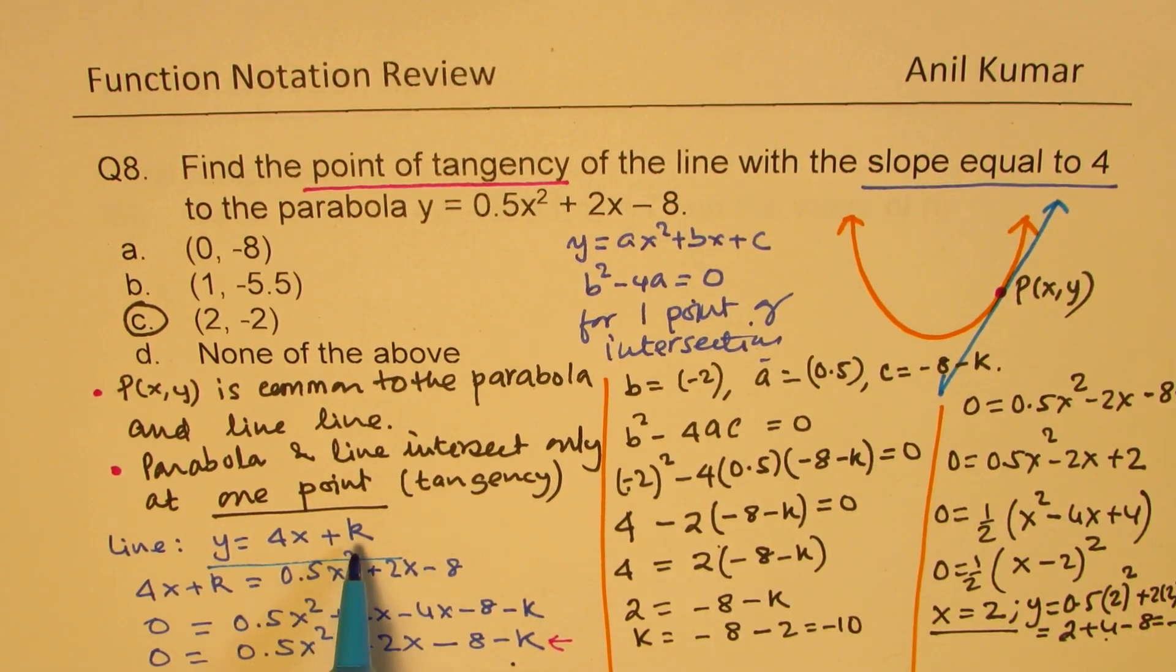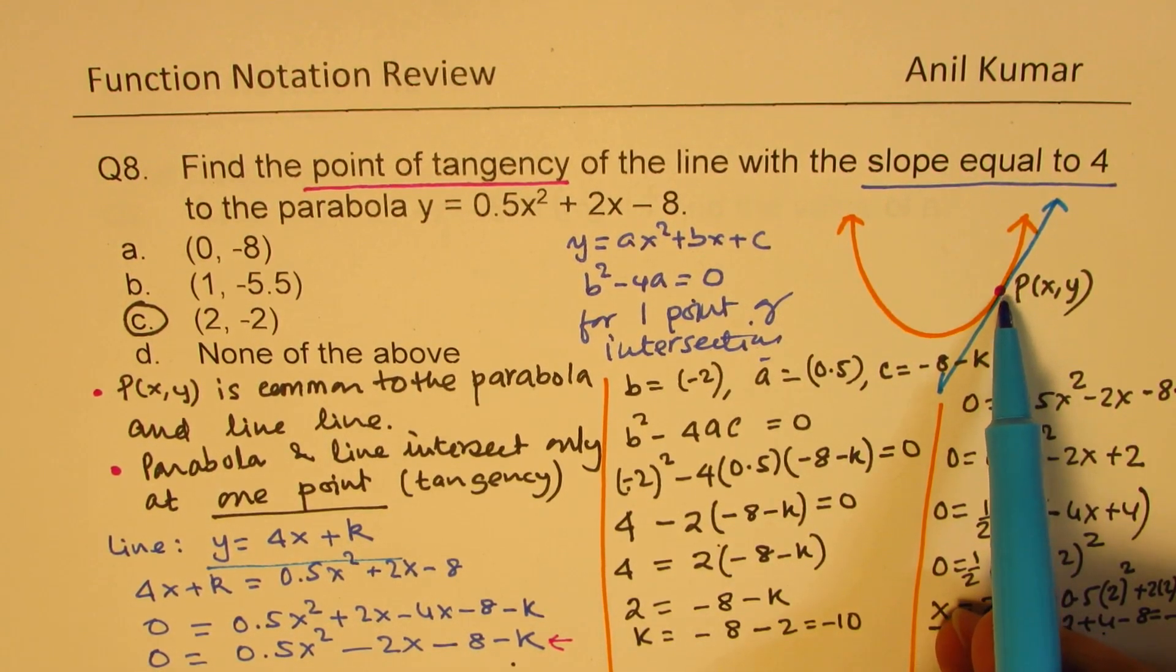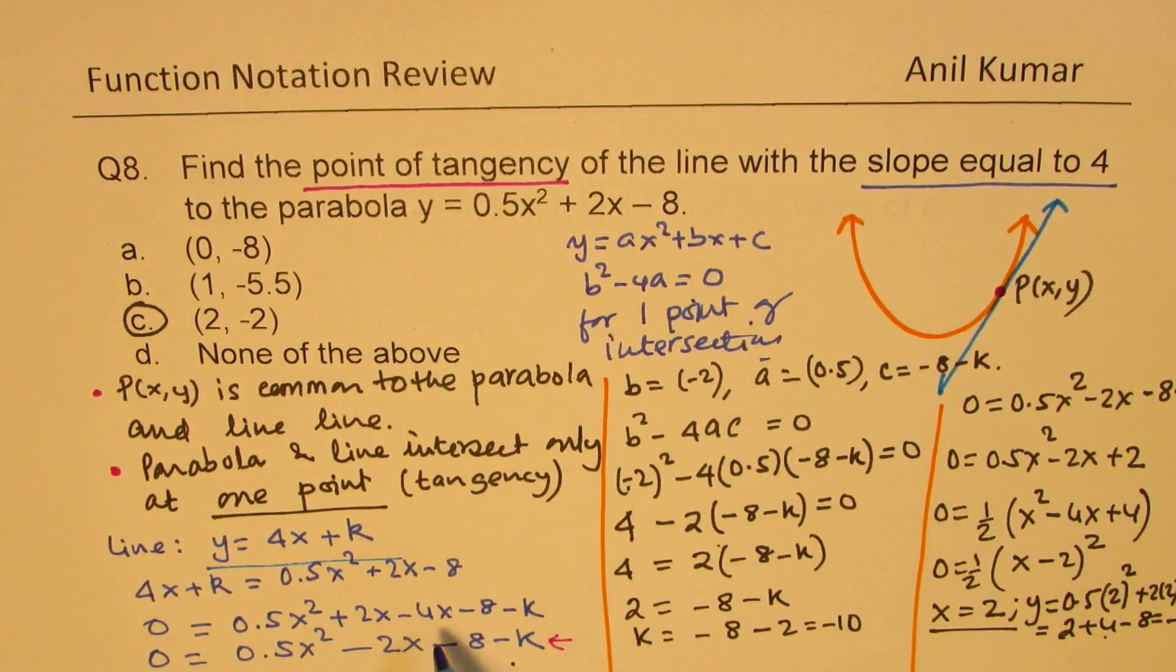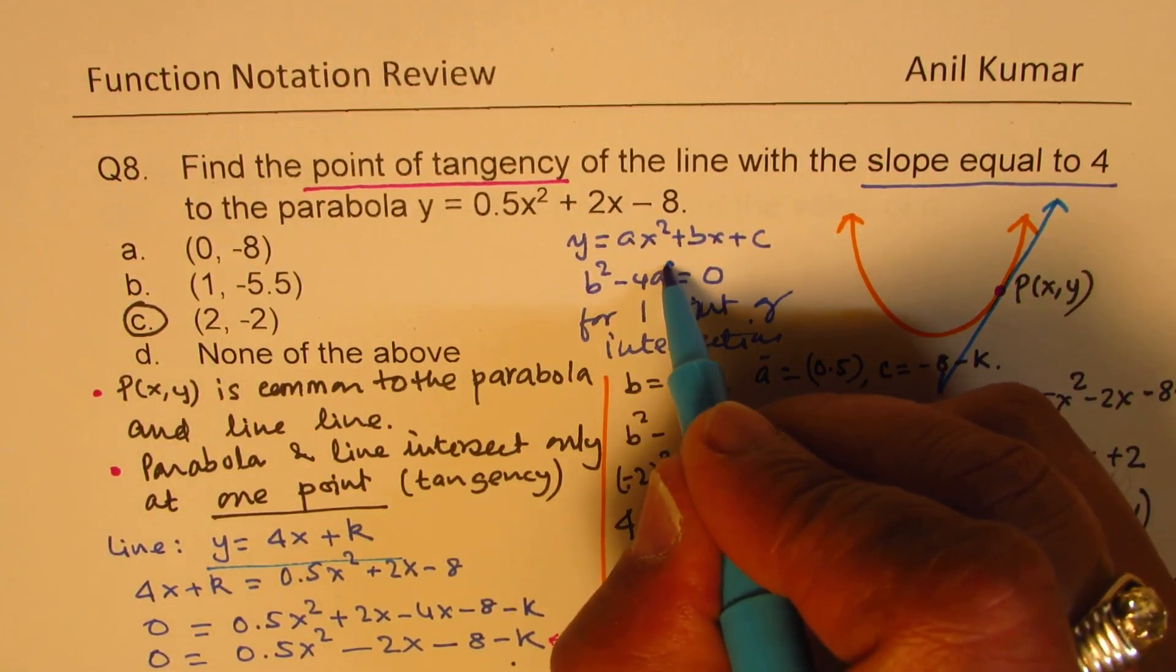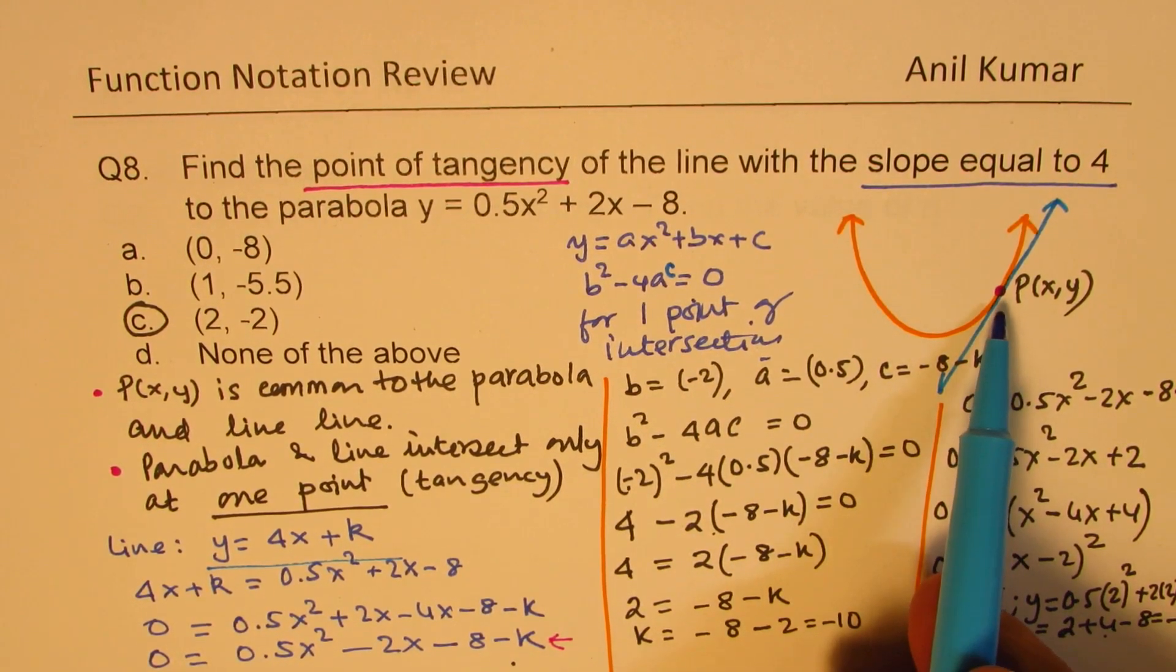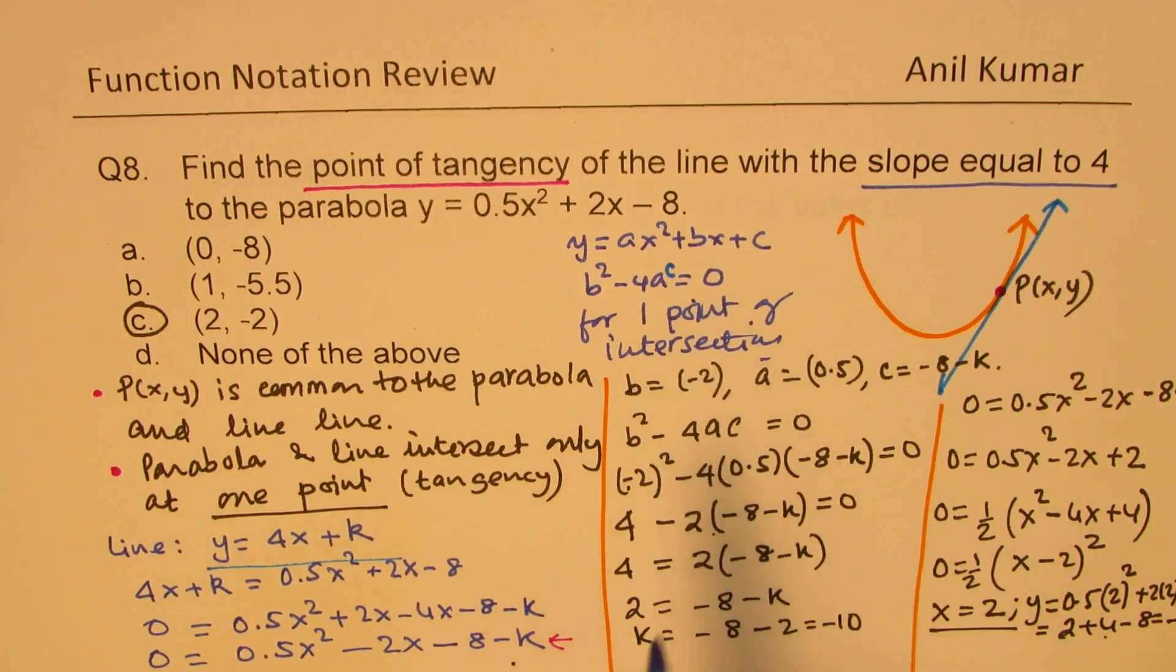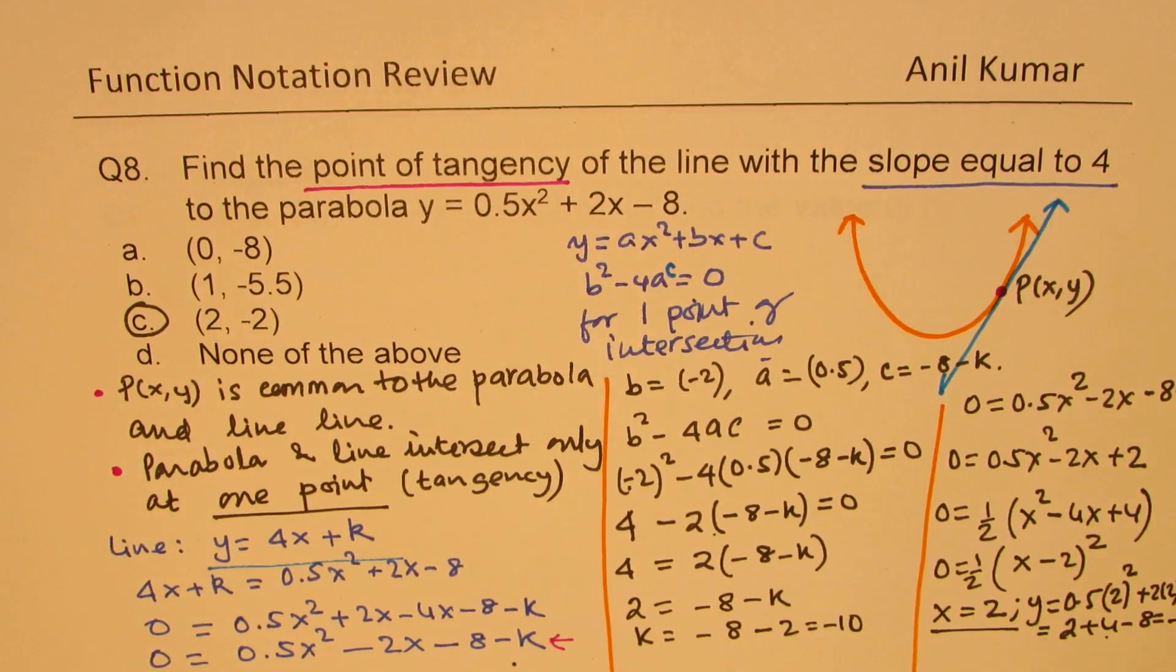Now, to find the value of k, we know that they intersect only at one point. So equating the y values, we get a quadratic equation, and this quadratic equation should satisfy the condition b² - 4ac = 0. Only then we have only one point of tangency. So substituting that, we could solve for k. Substituting k back into our equation, we got the value of x. It's kind of tricky. I hope you've understood all the steps.